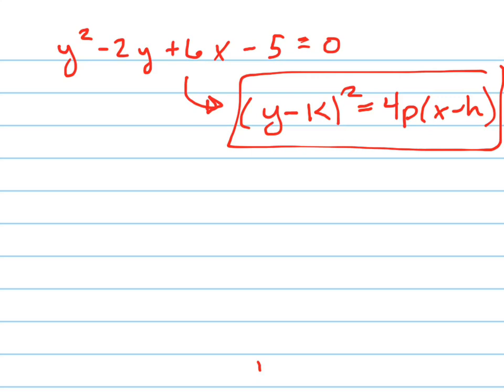To complete the square, the first thing I do is take half of that and square it, which is negative 1 squared is 1, add it, and also subtract it to the same side. Now, I could have also added it to both sides, or I could add it and subtract it to the same side.